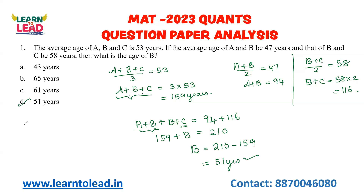So the age of B is 51 years. You should know the average concept and keep in mind that you should solve these complete questions within less than 30 seconds. Only practice will help you to improve your speed.